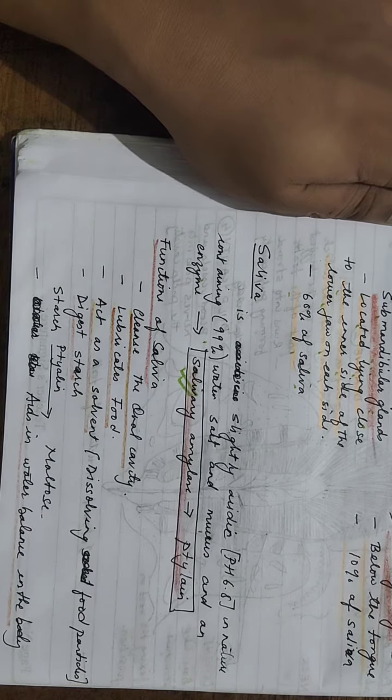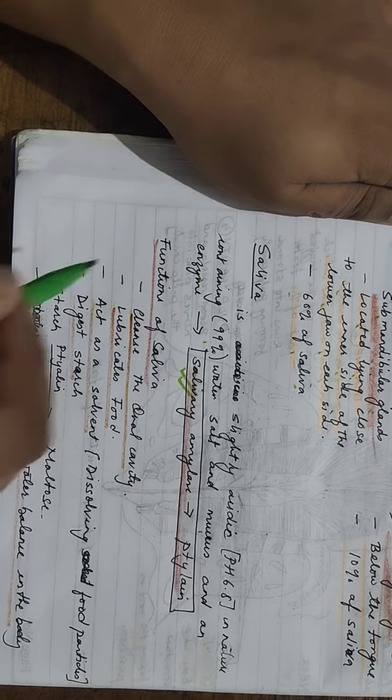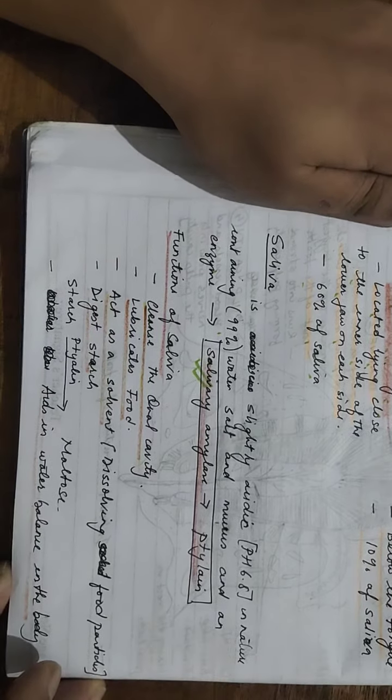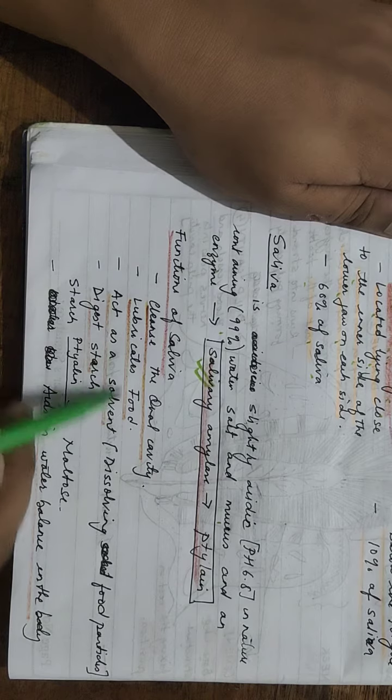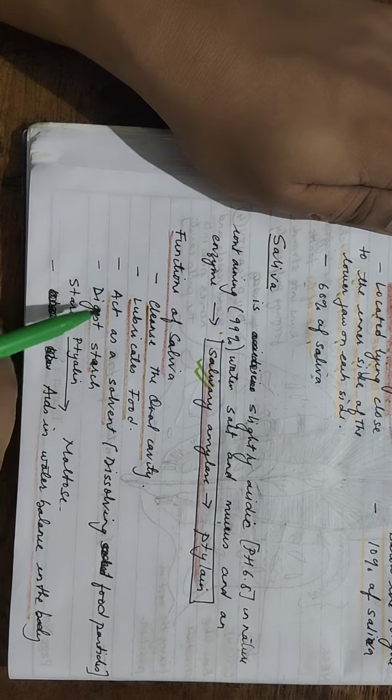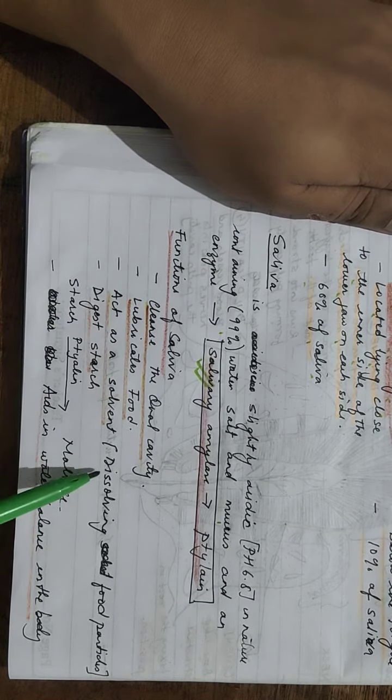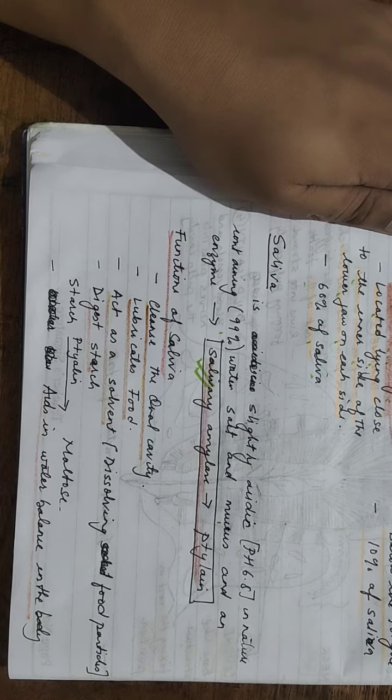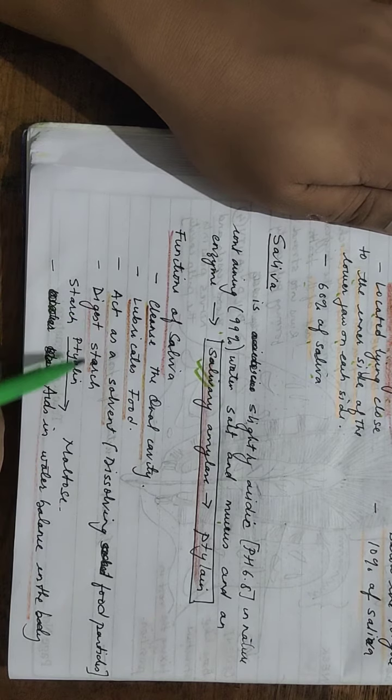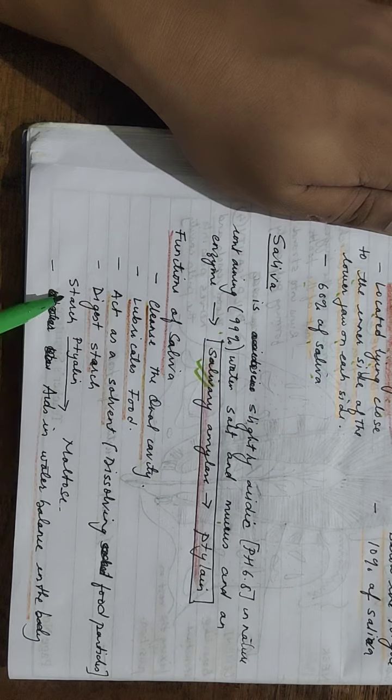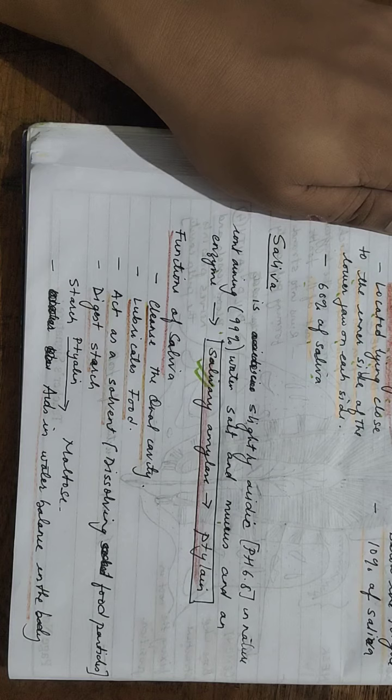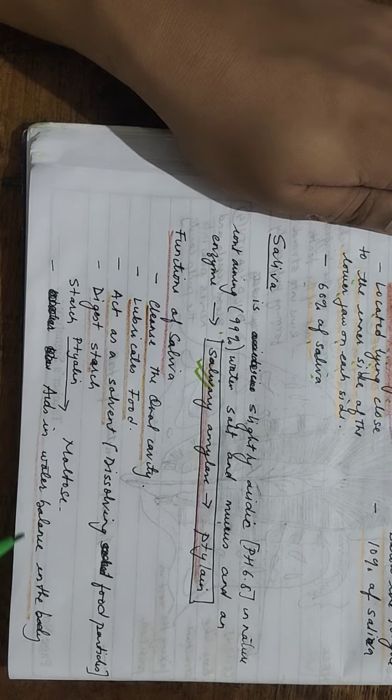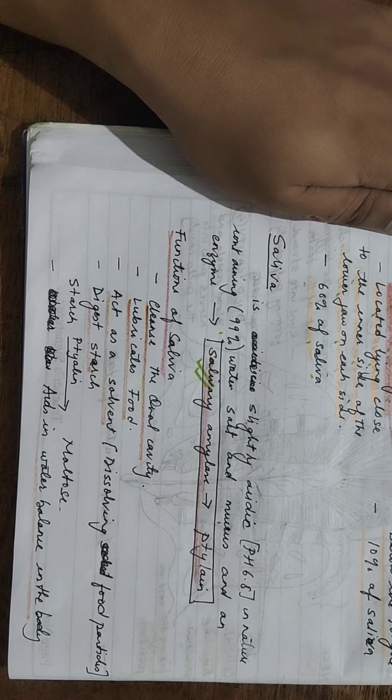Functions of saliva: it cleans the oral cavity in the mouth, lubricates the food, acts as a solvent dissolving food particles, and digests starch with the enzyme ptyalin, changing it to maltose. It also aids in water balance in the body.